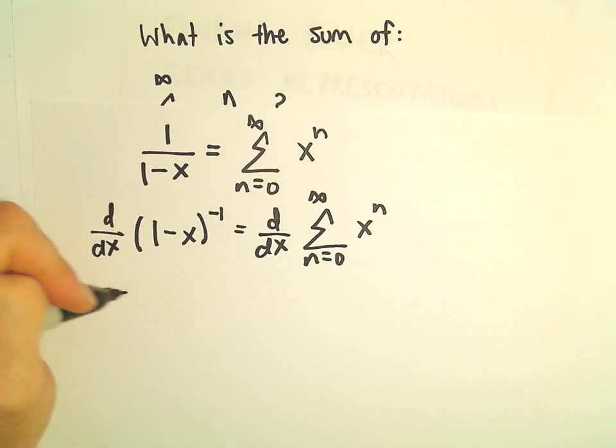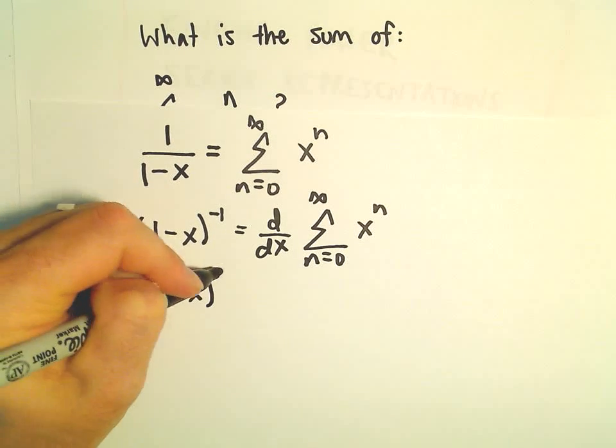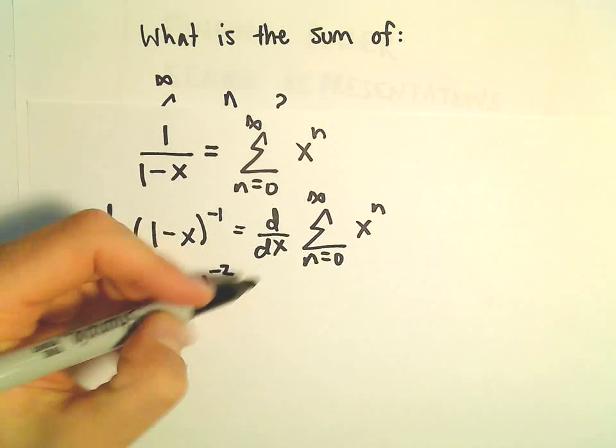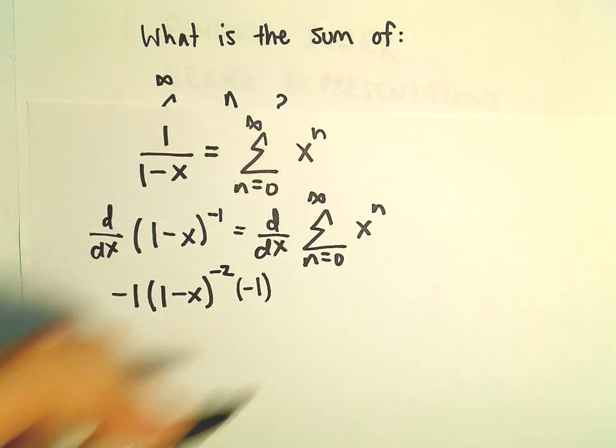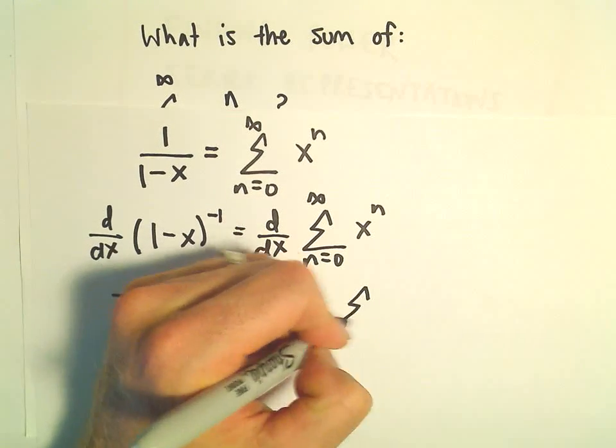Okay, on the left side we're left with negative 1 times 1 minus x to the negative second. We have to use the chain rule and multiply by another negative 1.